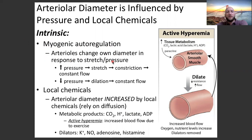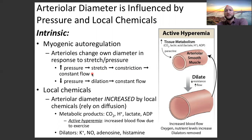When that pulse pressure wave comes down the arterial tree, arterioles are able to respond. Increased pressure causes increased stretch, which causes increased constriction, maintaining constant flow — it helps minimize the expansion the pulse pressure wave would cause. Decreased pressure, in between those pulse pressure waves, causes dilation, again maintaining constant flow.